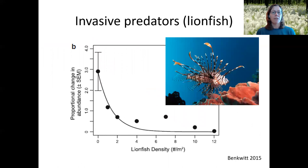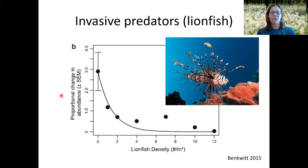Here's an example of an invasive predator: the lionfish invasion in the Caribbean. As lionfish density increases from zero to 12 per square meter, there's a rapid decline in native fish abundance — starting at around three and dropping steeply even with a single lionfish, because they are voracious predators eating all kinds of prey, before eventually leveling off.